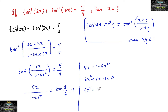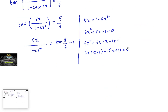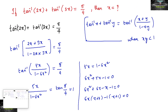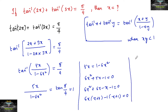By factorization: 6x squared plus 6x minus x minus 1 is equal to 0, giving 6x(x plus 1) minus 1(x plus 1) equals 0. So, we get 6x minus 1 into x plus 1 equals 0.